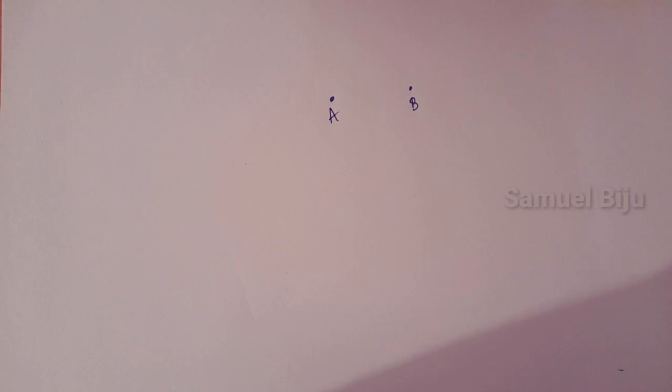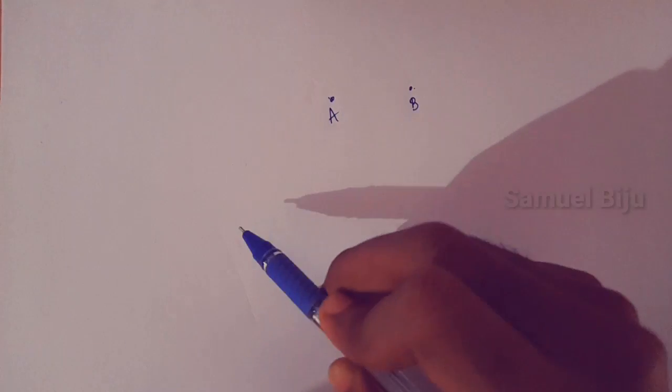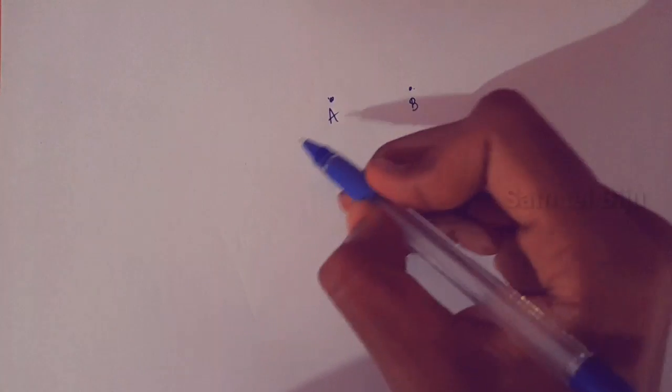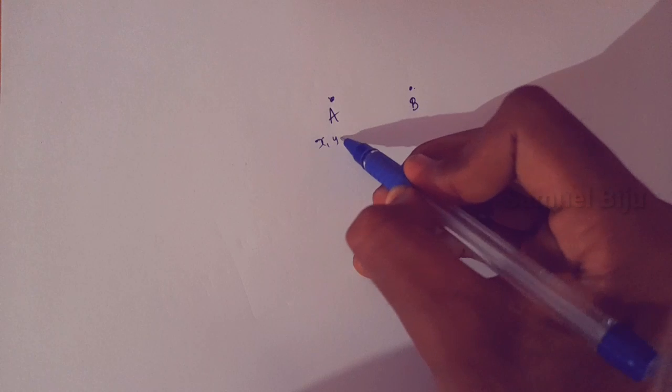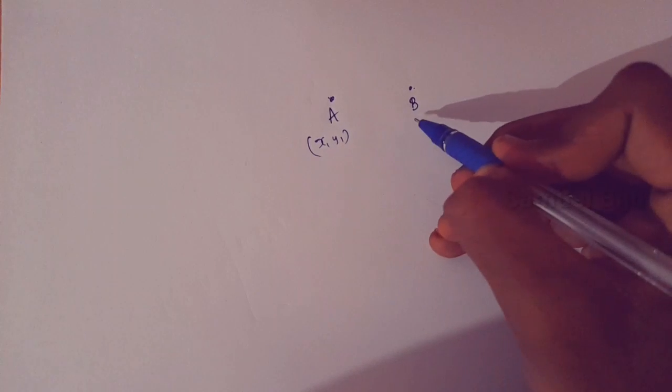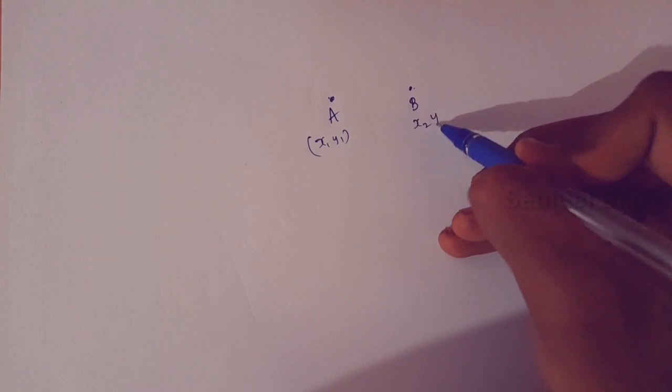Hey guys, what we learned is the section formula. It's a simple concept. We have two points A and B. The coordinate of A is x1, y1 and the coordinate of B is x2, y2.